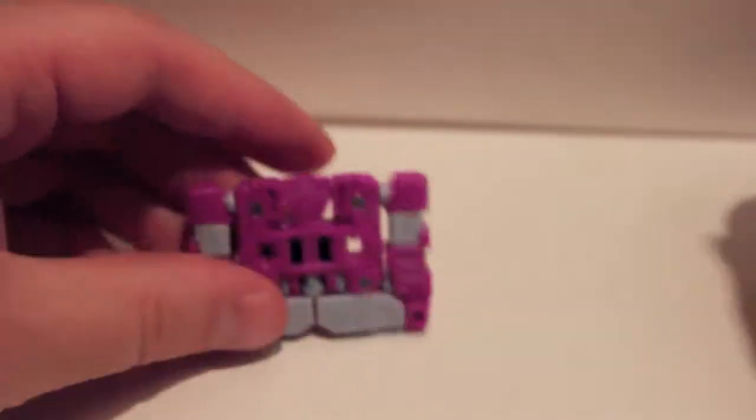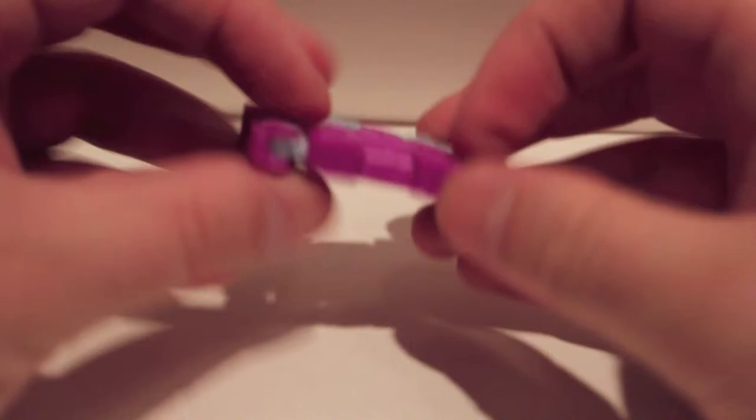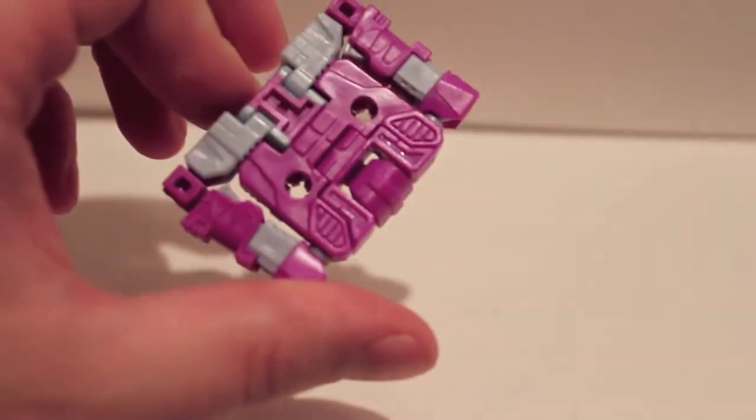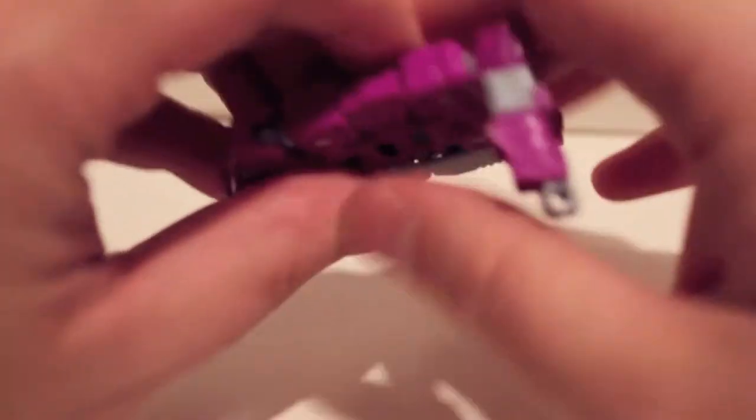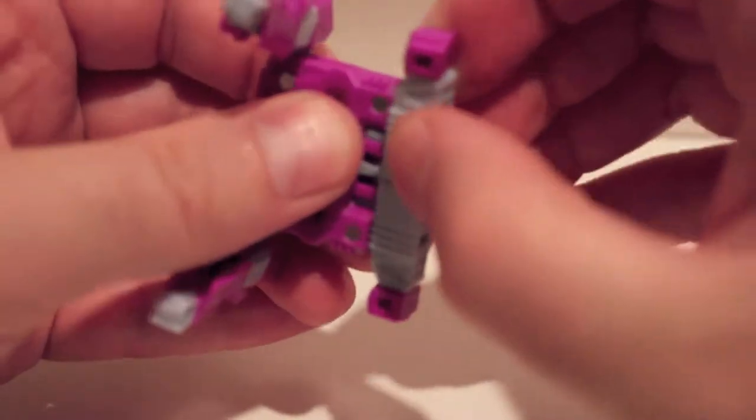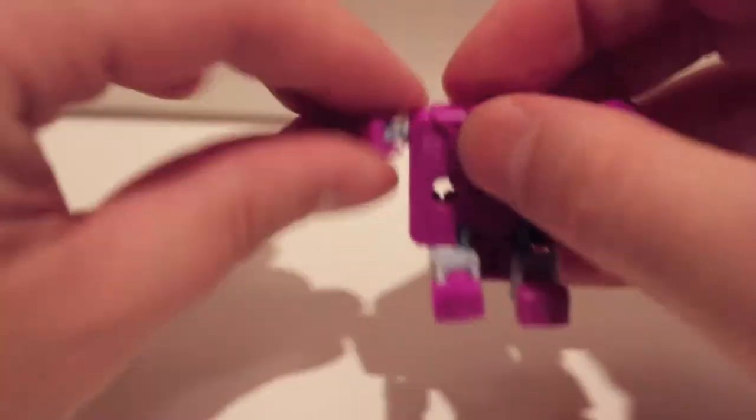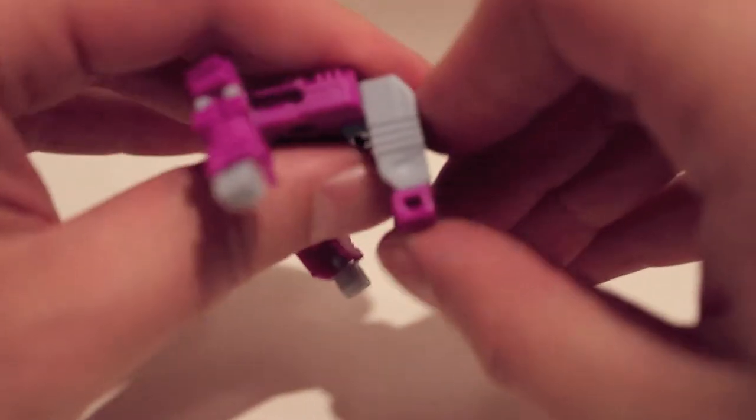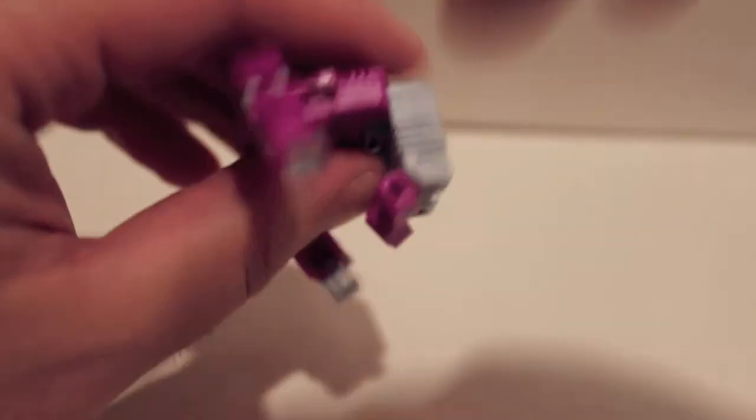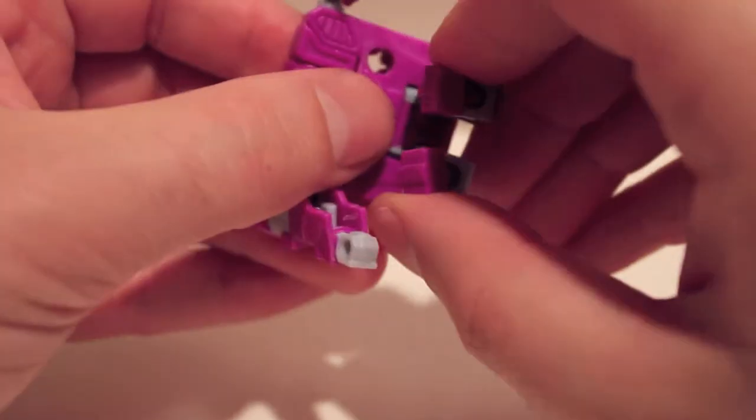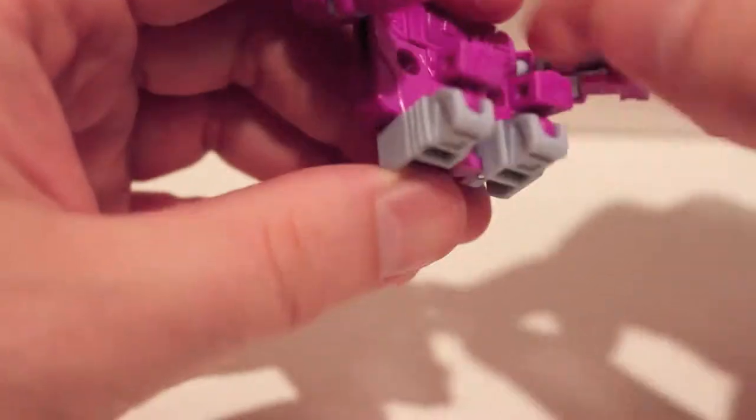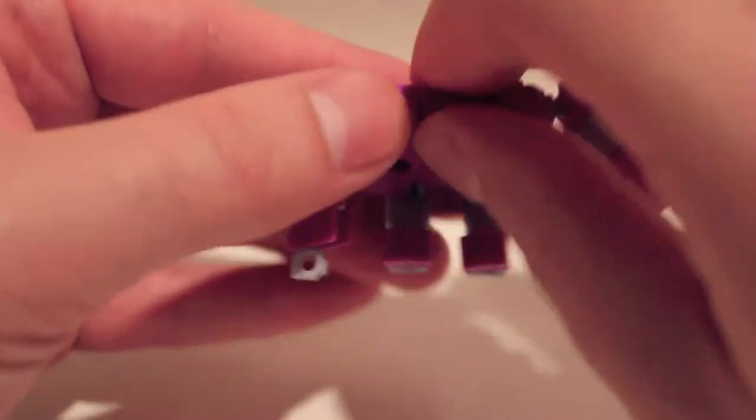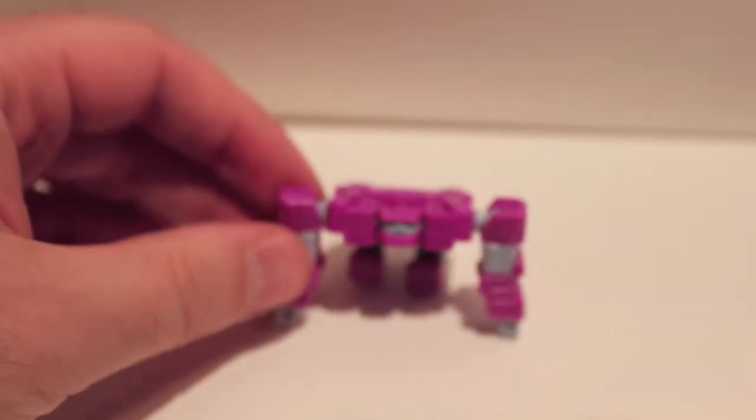So we'll take a look at these one at a time. Here's B-Box. To transform him, pull the arms around, flip out the hands, fold this way, fold out the feet. They're on ball joints, so you do have to kind of line them up. Rotate the head around, and there is B-Box.